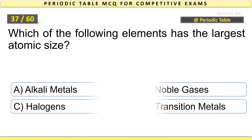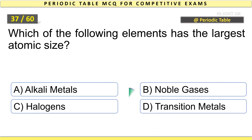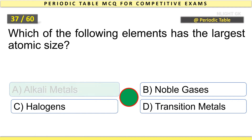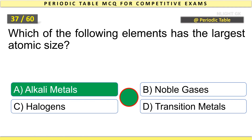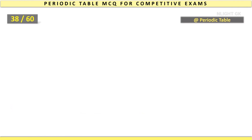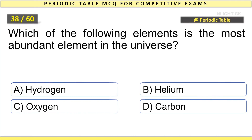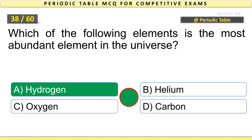Which of the following elements has the largest atomic size? Alkaline. Which of the following elements is the most abundant element in the universe? Hydrogen.